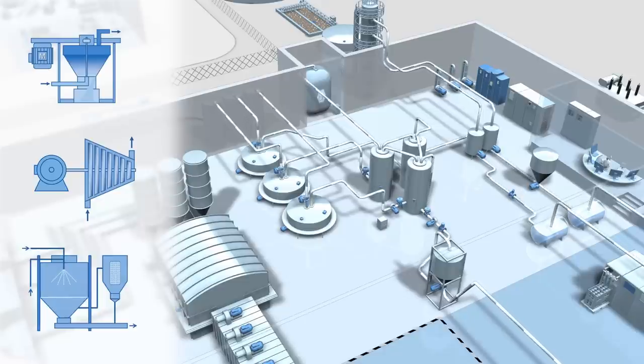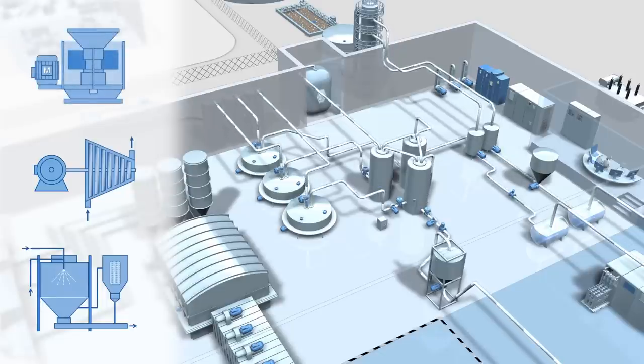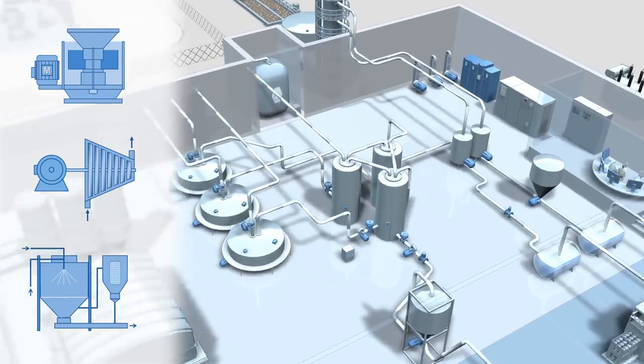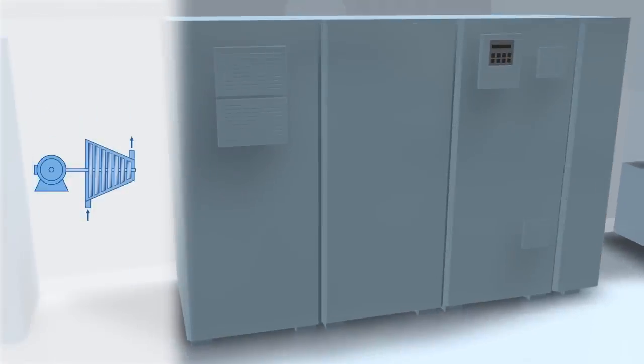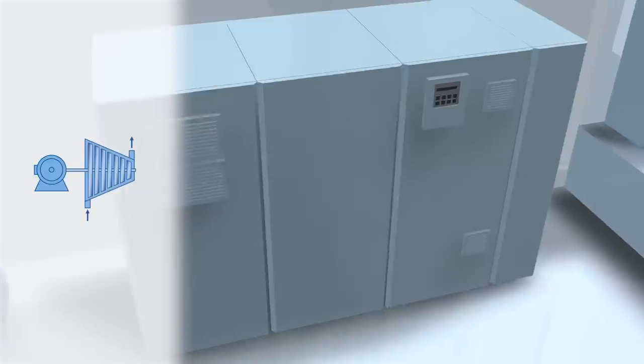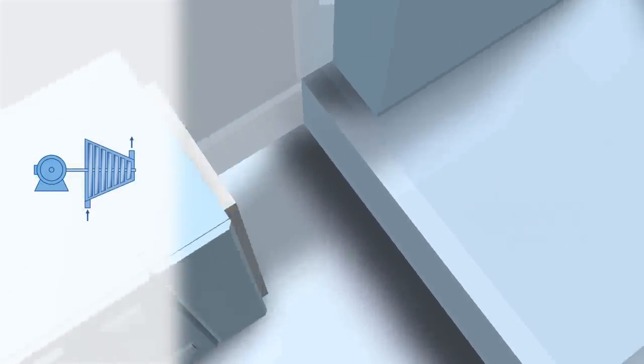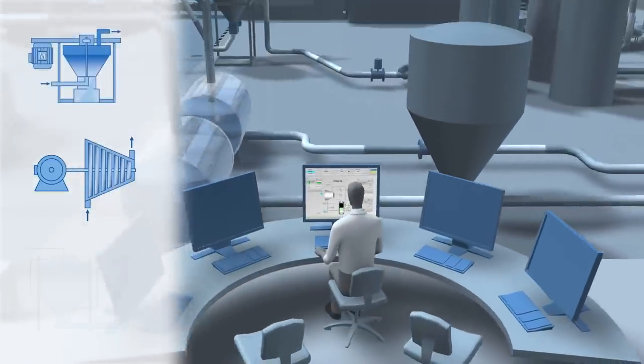The benefit of this modular design: individual plant sections can be maintained or replaced as required, independently of the overall plant. However, the modular design also presents specific challenges, because the automation and control engineering is already integrated into the package units, but the overall plant is controlled centrally from the process control room. It is therefore essential to embed the controllers of the package units smoothly into the automation solution of the overall plant.